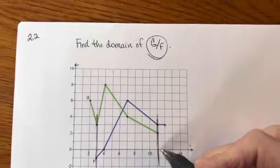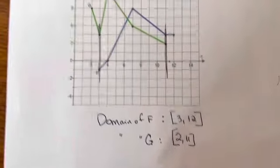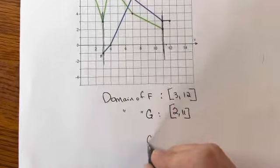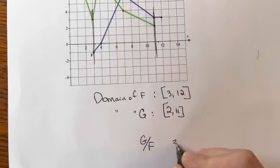to 11. So you would think for g over f, I would go from 3 to 11.